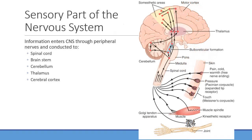The sensory portion of the nervous system brings information into the CNS through peripheral nerves, conducting through the spinal cord, brainstem, cerebellum, and thalamus — a kind of command station controlling which signals go where. From there signals reach the cerebral cortex, including the motor cortex, somatosensory cortex, and the occipital lobe for vision.